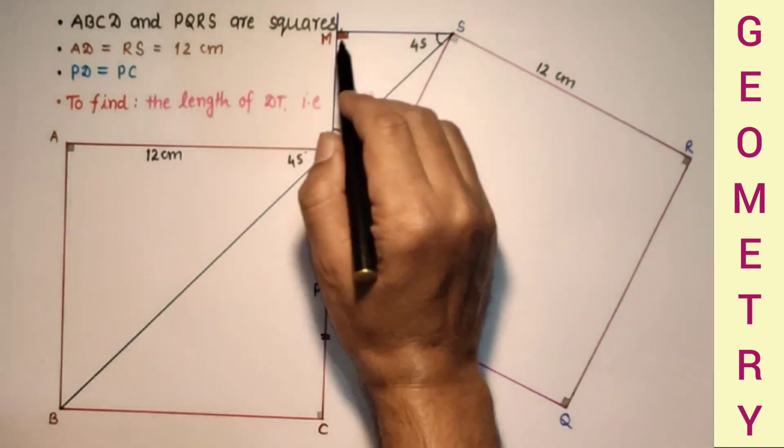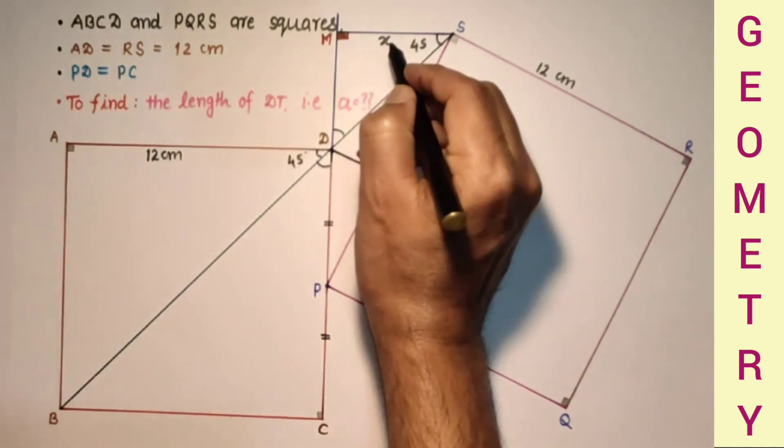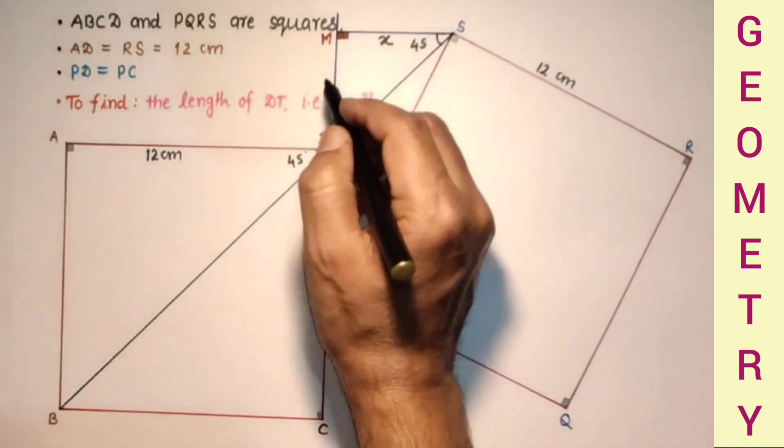If we assume the length of MS as X, then this MD will also be X.